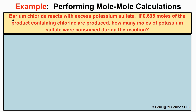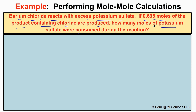In this example problem, barium chloride reacts with excess potassium sulfate. If 0.695 moles of the product containing chlorine are produced, how many moles of potassium sulfate were consumed during the chemical reaction? We have a chemical reaction right here, however we don't see the chemical reaction equation. We're given the number of moles of one substance and asked to figure out the number of moles of another substance.